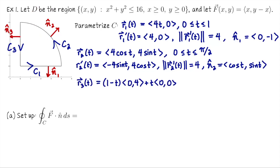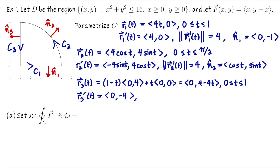For C3, parametrize using the line segment formula: (1-t) times the start plus t times the end, giving R3(t) = (0, 4 - 4t), t ∈ [0, 1]. The velocity vector is (0, -4) with constant speed 4. The outward pointing unit normal is (-1, 0), pointing one unit to the left.